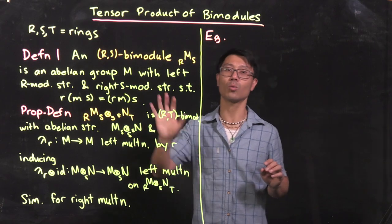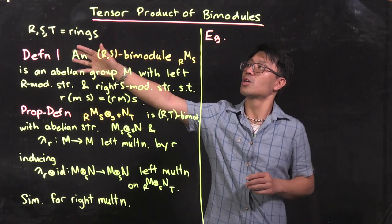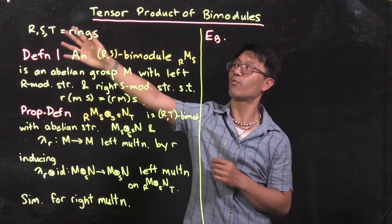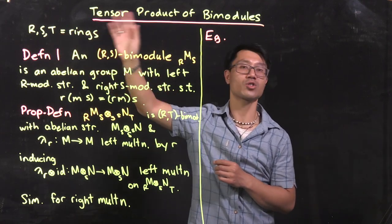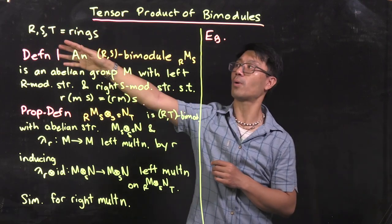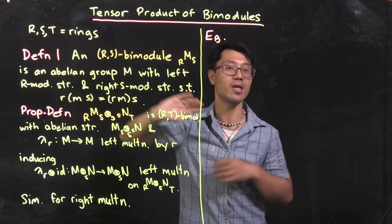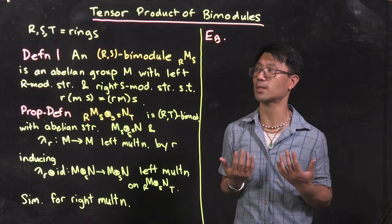So let's start. What's the type of data that we have? We're going to have to work with not just one ring, but possibly several. So let R, S, T be notation for rings.